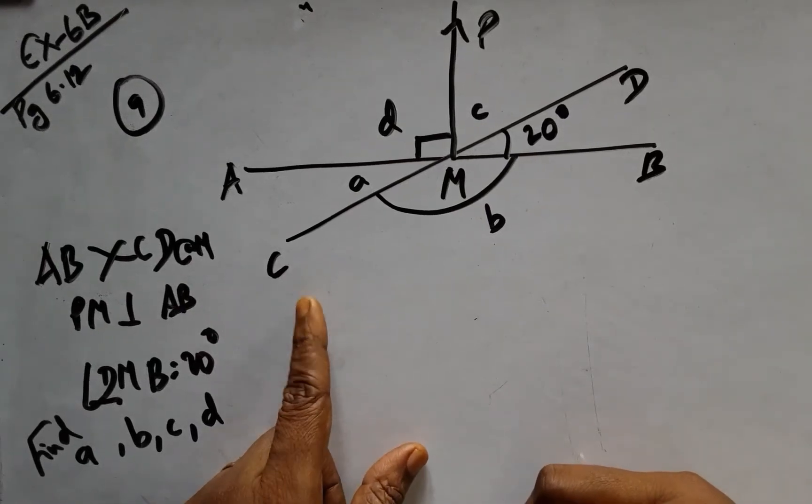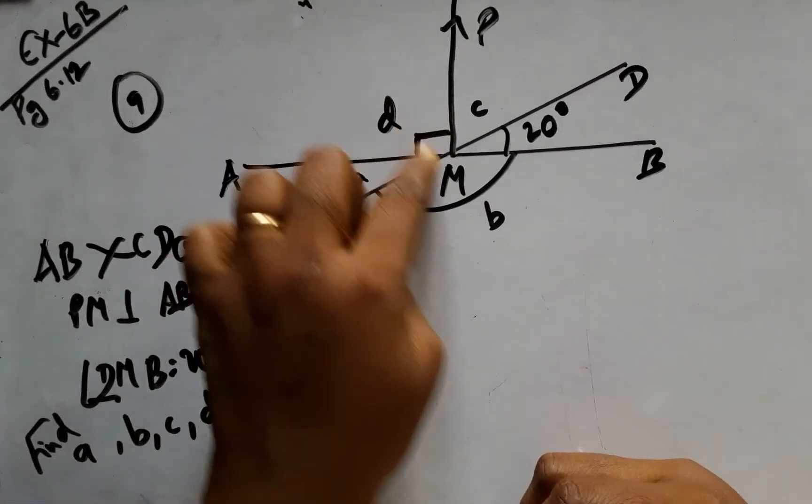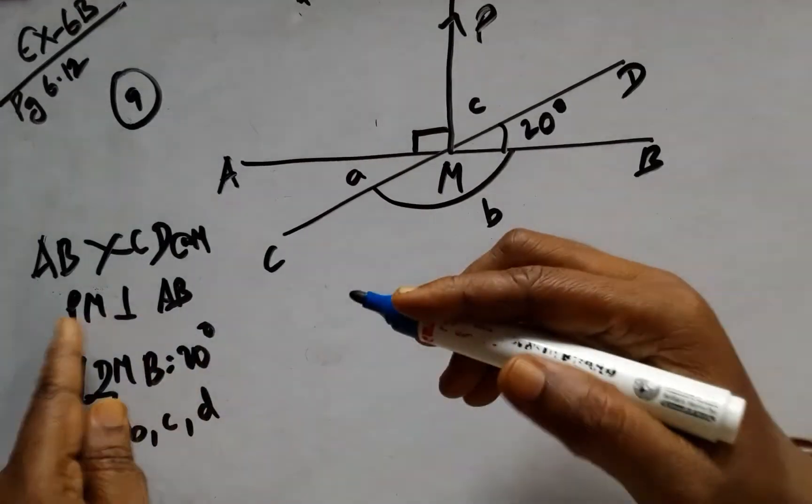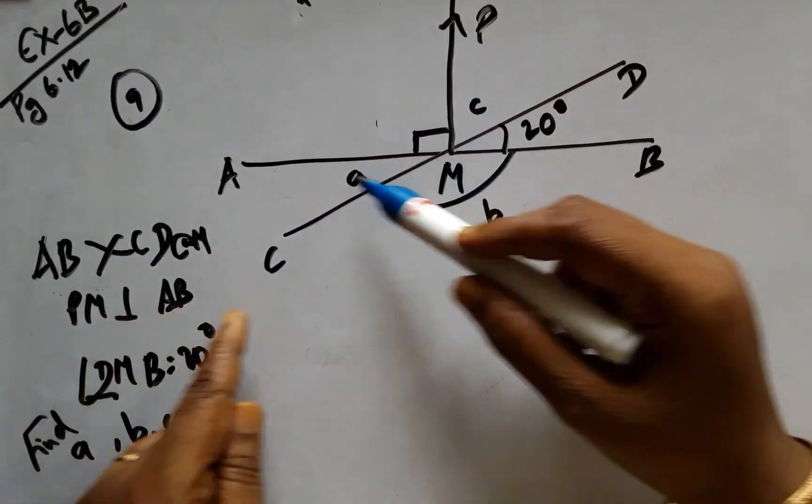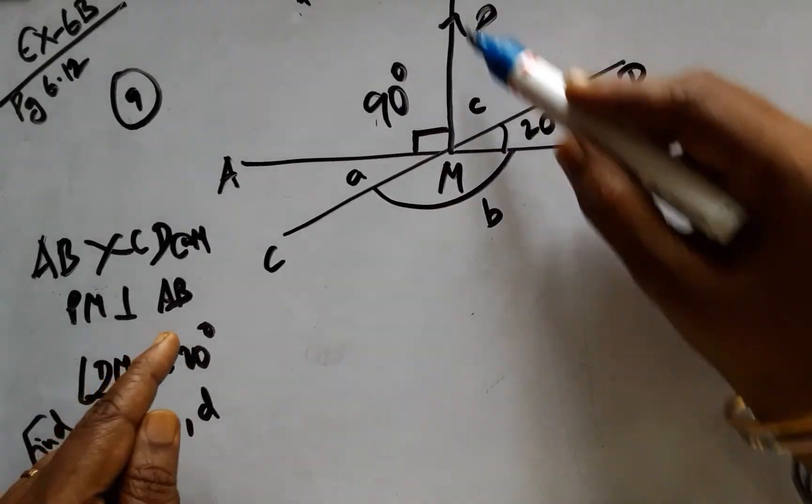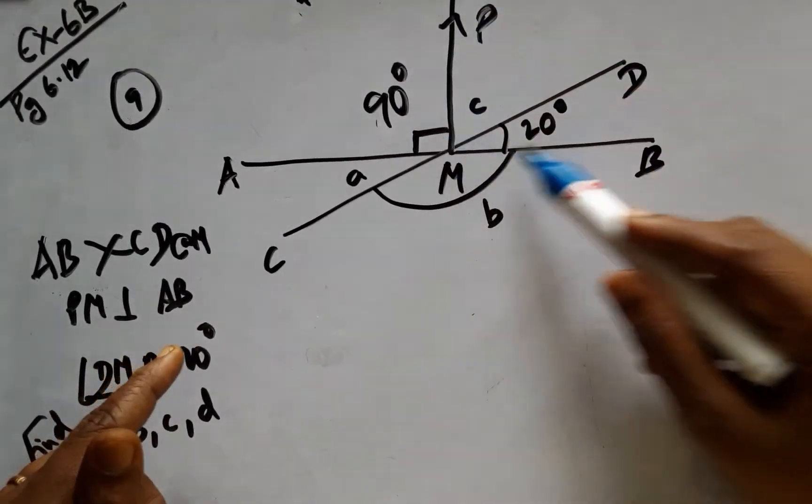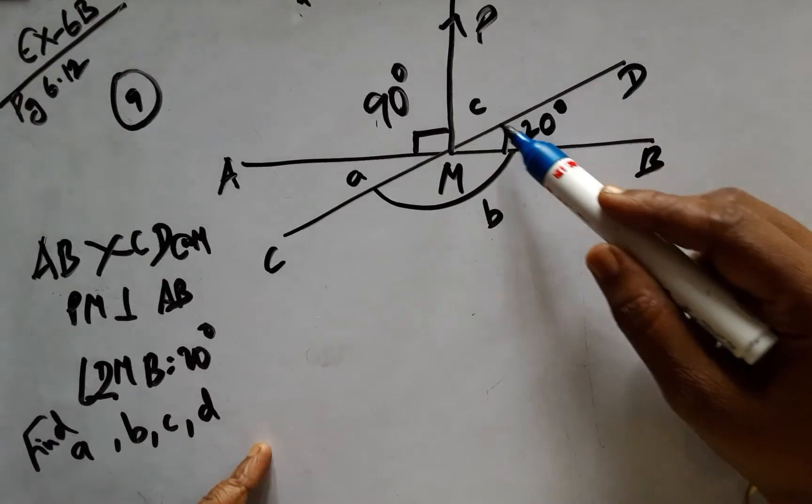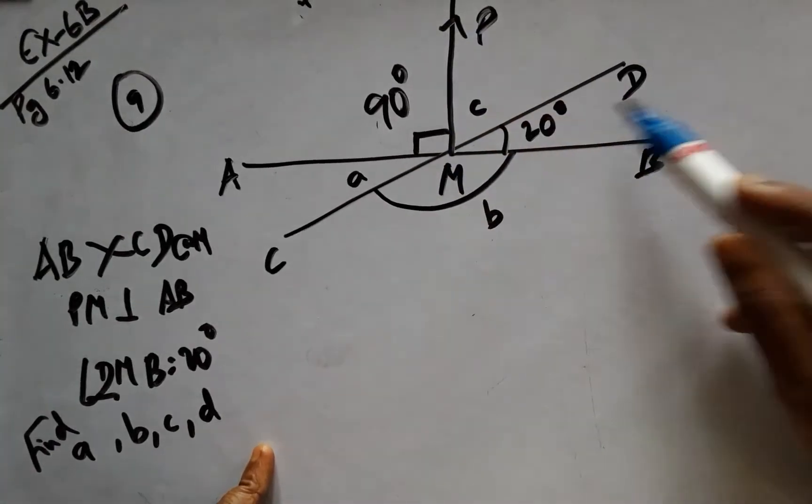Though this problem seems lengthy, it is a very quick fix solution. As we know here, PM is perpendicular to AB, which makes this 90° and this also is 90°. Therefore, angle PMD will be nothing but PMB minus 20°.